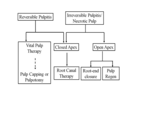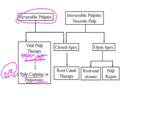In cases of reversible pulpitis where the pulp is vital and there is an open apex, we consider pulp capping or pulpotomy — either direct or indirect depending on the depth of the lesion. If the depth is minimal, indirect pulp capping; if there is some exposure, direct pulp capping; if the coronal portion is involved, pulpotomy. All of this is done in open apex cases with vital pulp so we can allow root closure to take place.